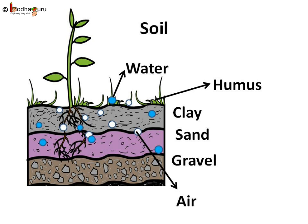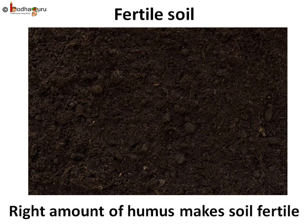So, now we know that in general, soil consists of small pebbles or gravels. It also contains sand, clay, and other particles too. Air and water are also present in the soil. The dead leaves and decayed organic substances found in the soil form the fertile humus. If a soil has the right structure to trap air and water, and has the right amount of humus to provide nutrients to the plants, it would be fertile.